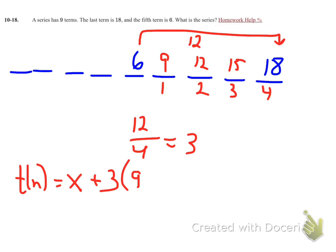Now, when I put 9 in for n, if there's 9 terms, that means it's going to equal my last term, which I now can put in as 18.